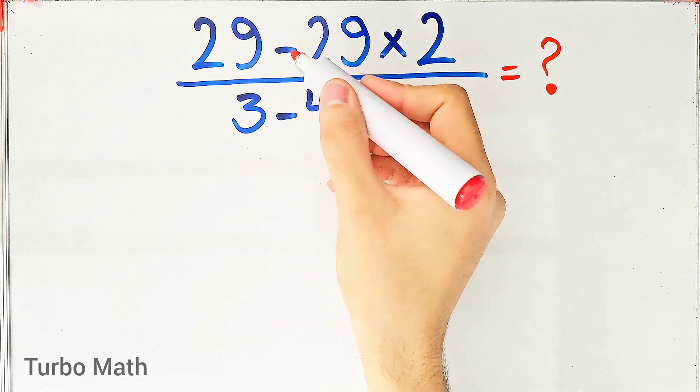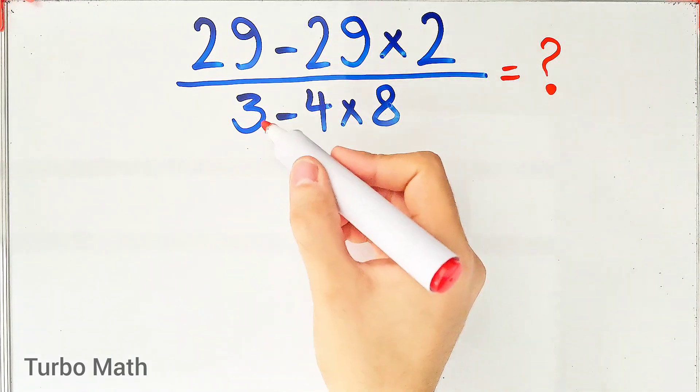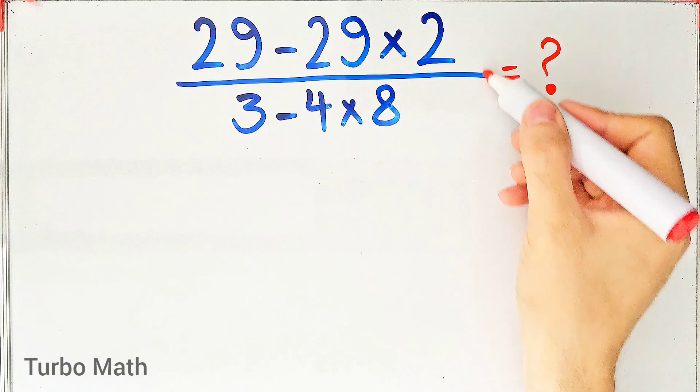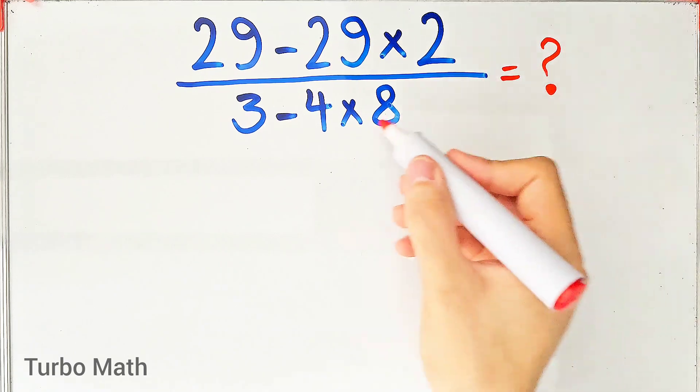29 minus 29 times 2 over 3 minus 4 times 8. What is the answer to this question? Can you solve it?